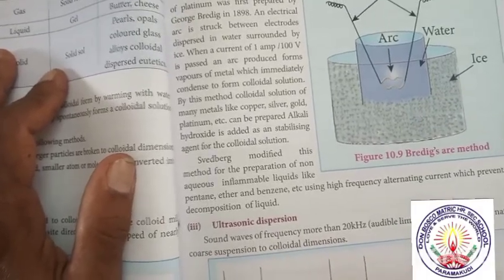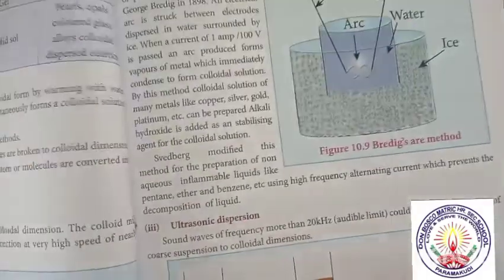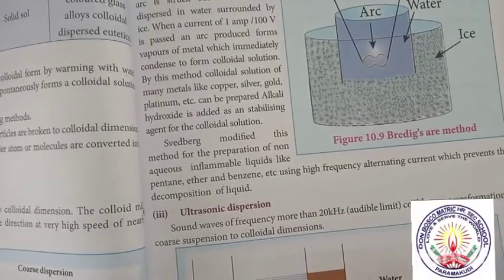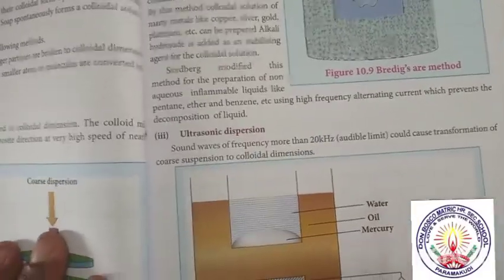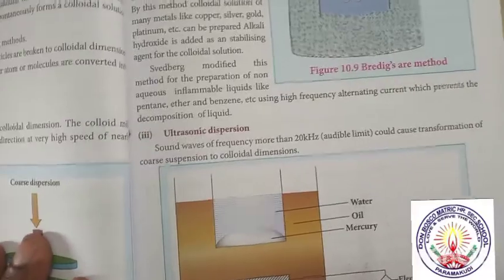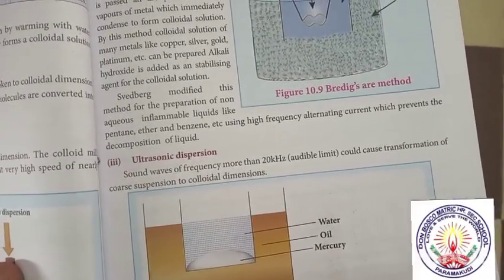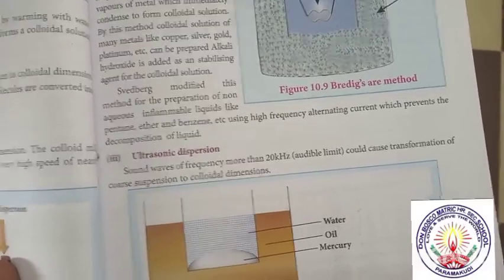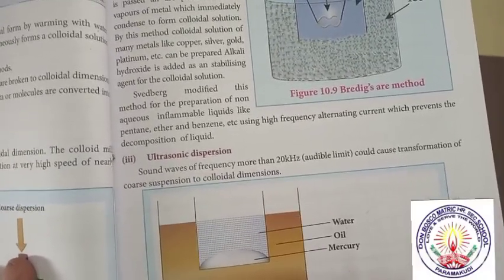Svedberg modified this method for preparation of non-aqueous inflammable liquids like pentane, ether, and benzene, using high-frequency alternating current which prevents the decomposition of liquids. Ultrasonic dispersion: sound waves of frequency more than 20 kHz could cause transformation of coarse suspensions to colloidal dimensions.